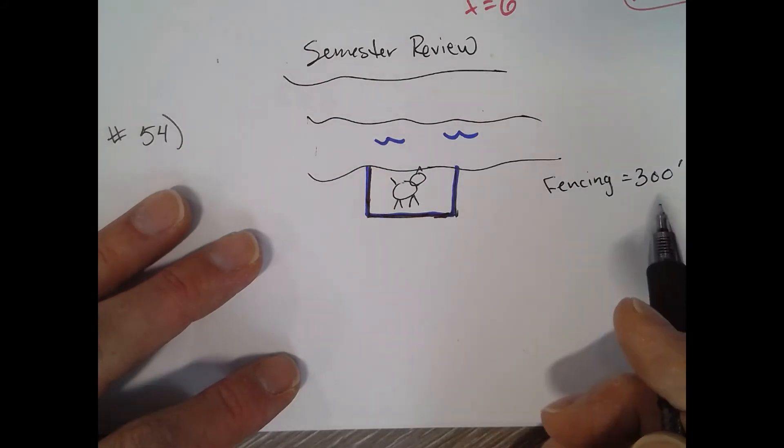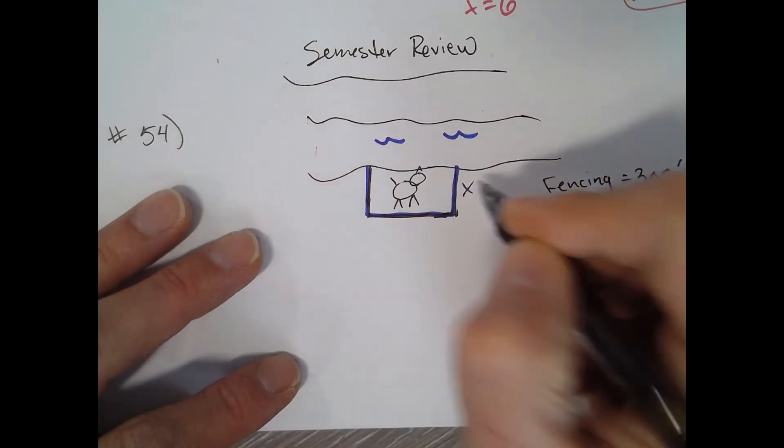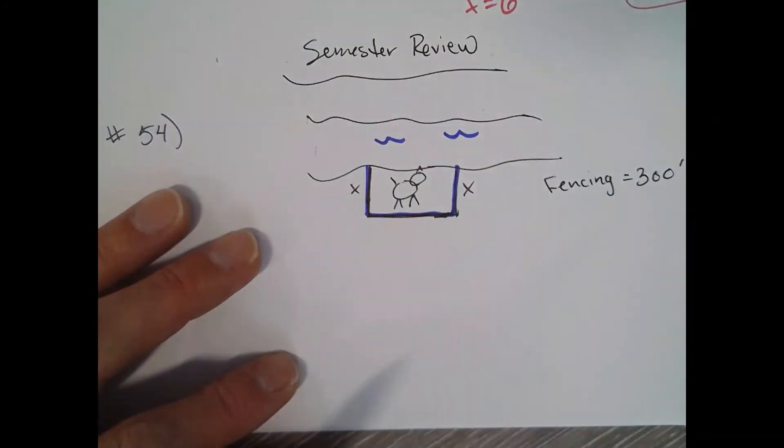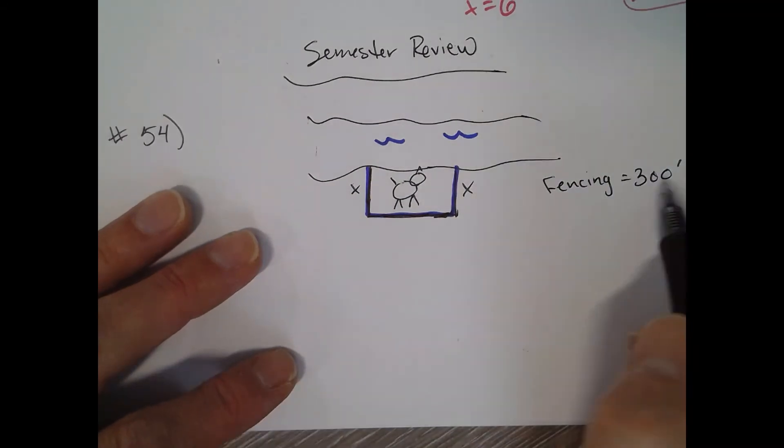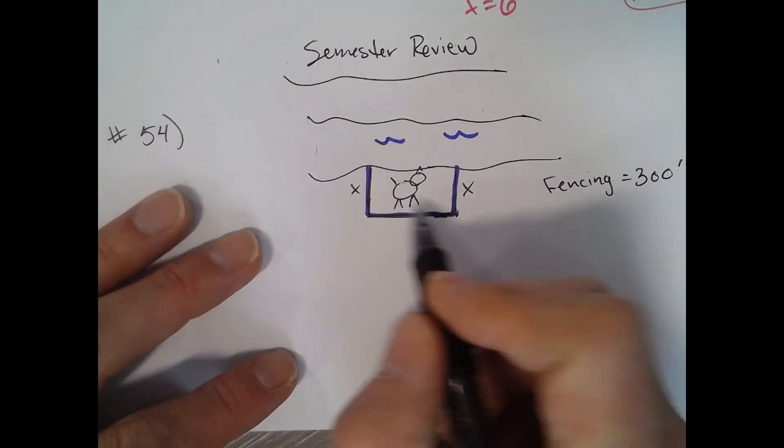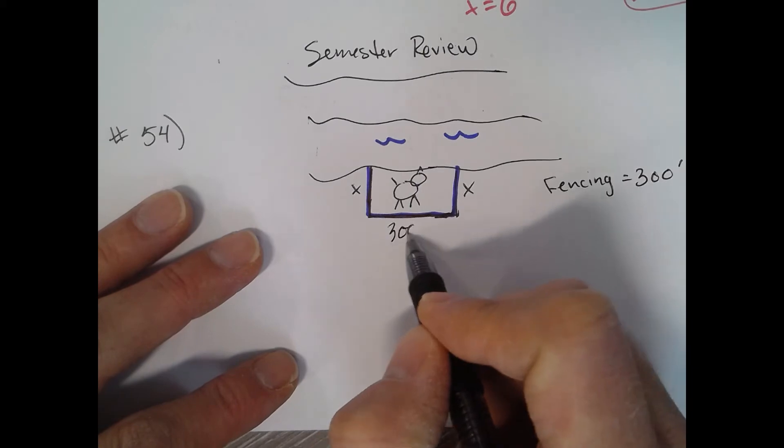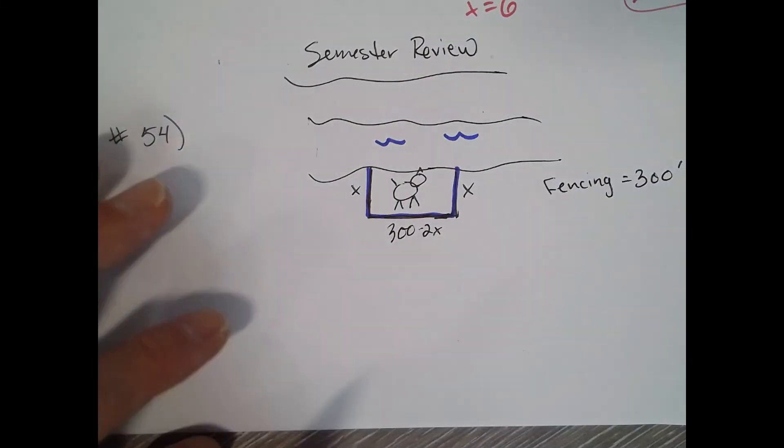Knowing that the fencing is 300, we don't know what this is, so I'm going to call it x. That means that's x. So we're left with 300 minus both of those, so that's 300 minus 2x. That's how much the fencing is.